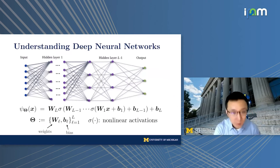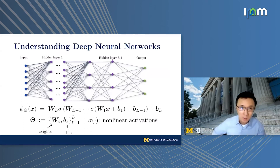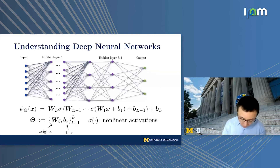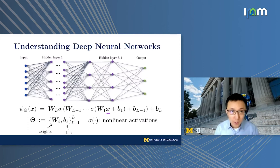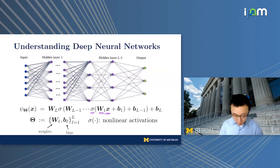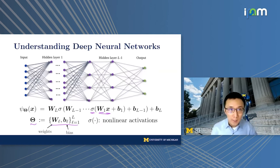We know that deep networks have witnessed tremendous success in computer vision, natural language processing, and many machine learning applications, yet people still view neural networks as a black box. The typical vanilla form of a neural network takes input X, passes it through layers with weight matrices followed by non-linear activation functions such as ReLU or max pooling. We call theta the weights of the deep network.